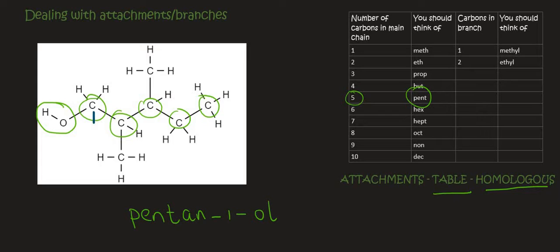Then we need to look for the branches. So we've taken care of that. Some people call it the attachments. So we've got attachments here on carbon number two. We can see there's this attachment. And then on carbon number three, we've got this attachment.